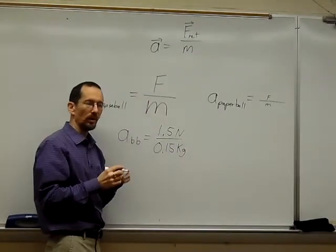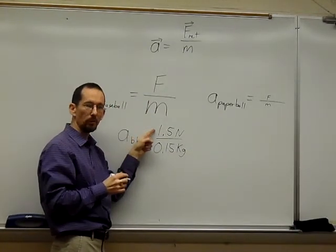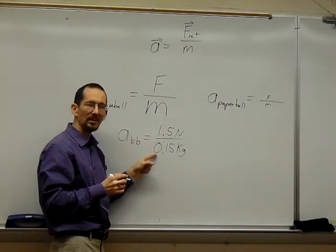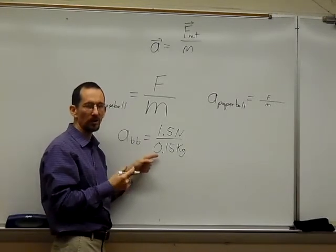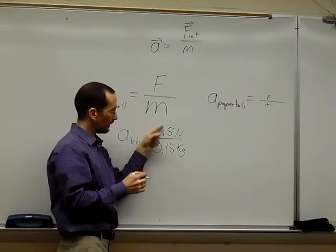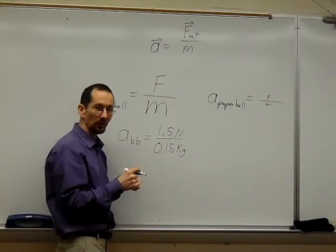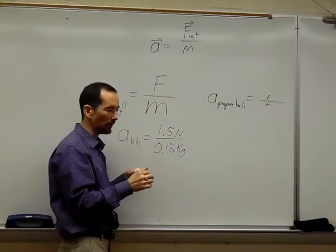For the baseball, it has a force of gravity of 1.5 newtons and a mass of 0.15 kilograms, or 150 grams. You can divide that. Go ahead and try it on your calculator if you like. Pause the video.